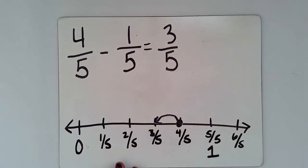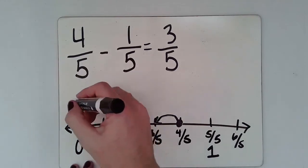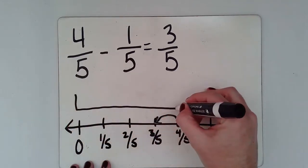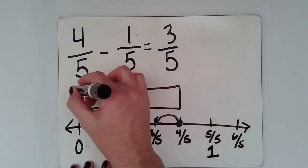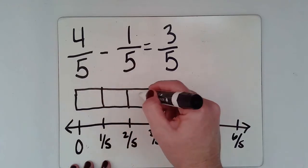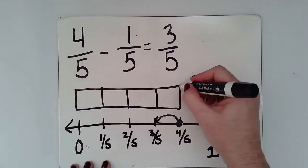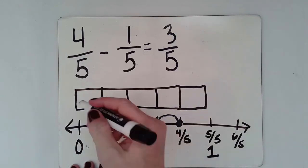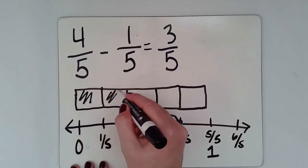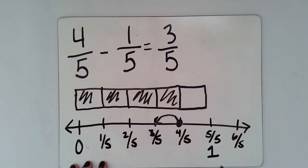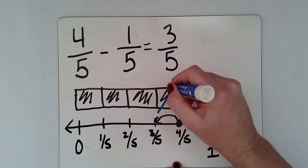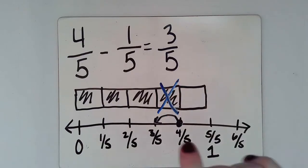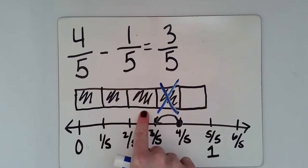I can also draw a model to show this. So I can have my model here. And this would illustrate four fifths. But I'm going to go ahead and add one more just to show the whole. So I'm going to have mine here. So I've got four fifths illustrated. And now when I take away one of those fifths, I'm only going to have three left over.